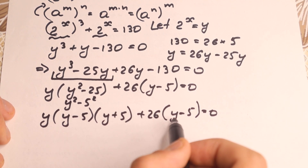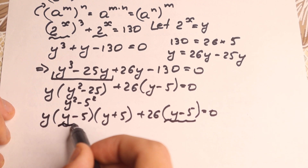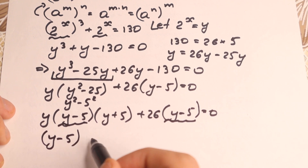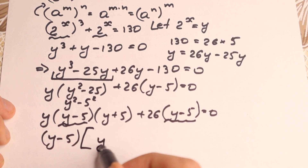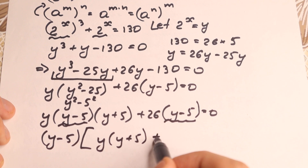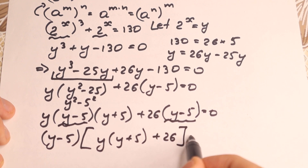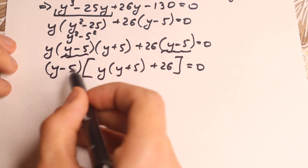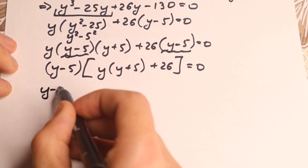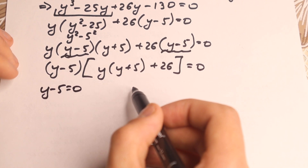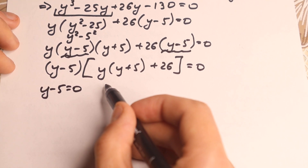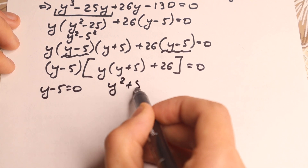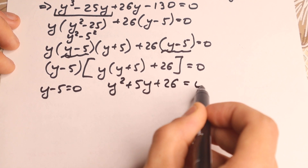We have (y minus 5) appearing in both terms, so we can factor it out. So (y minus 5) times [y(y plus 5) plus 26] equal to zero. Expanding y times (y plus 5) gives y squared plus 5y, so we have the product: (y minus 5) times (y squared plus 5y plus 26) equal to zero.